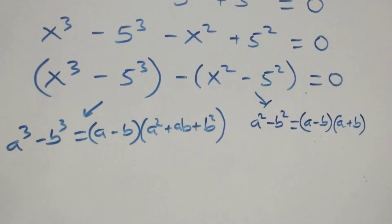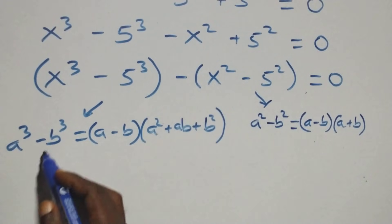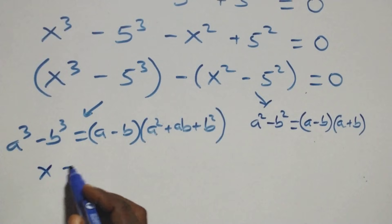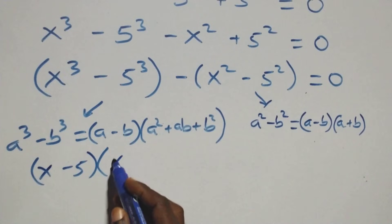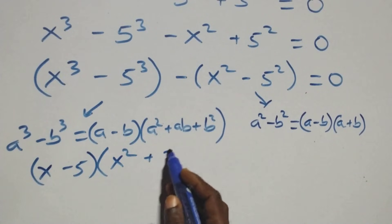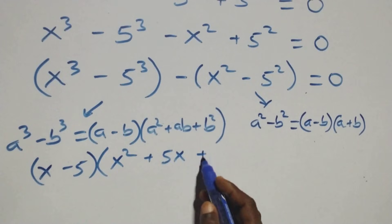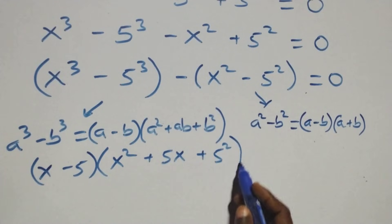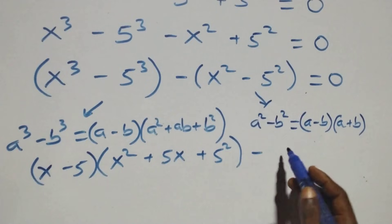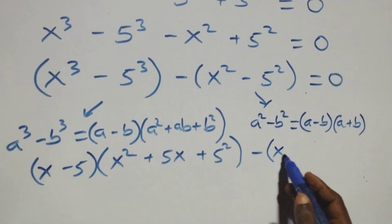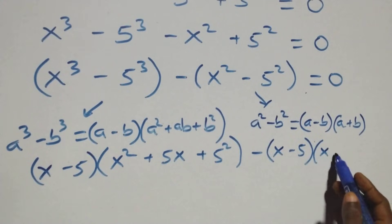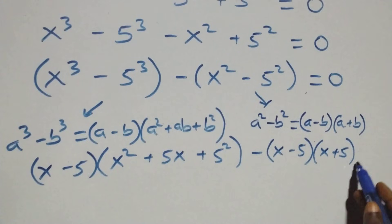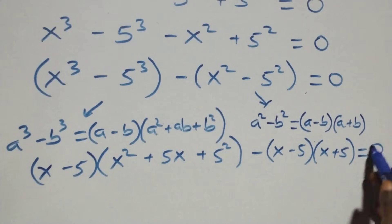Then we can now express this following these identities: (x minus 5)(x squared plus 5x plus 5 squared) minus (x minus 5)(x plus 5) equals to 0. That is: (x minus 5)(x squared plus 5x plus 25) minus (x minus 5)(x plus 5) equals to 0.